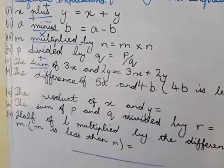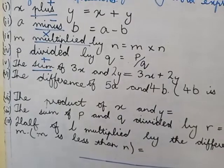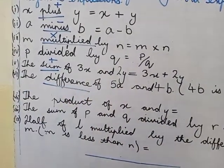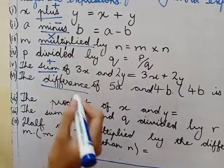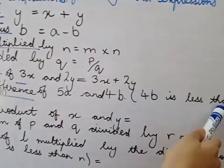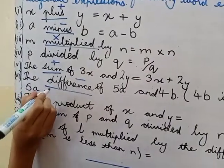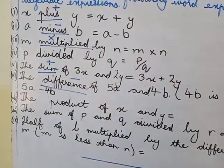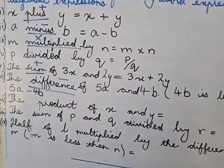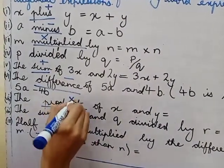The sixth part is the difference of 5a and 4b. 4b is less than 5a. What is the meaning of difference? It means to subtract, minus 4b. 5a minus 4b. The seventh part is the product of x and y. Product means multiplication.